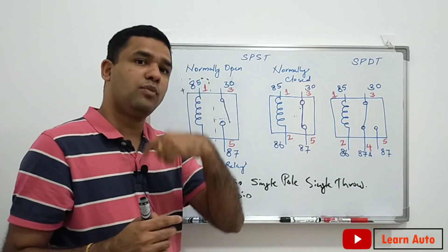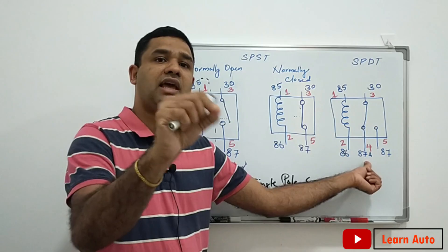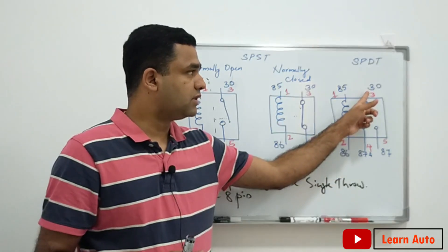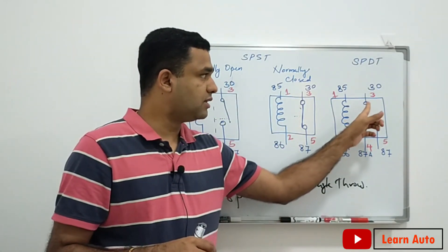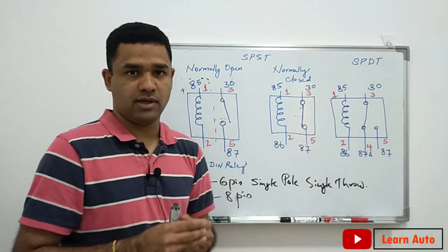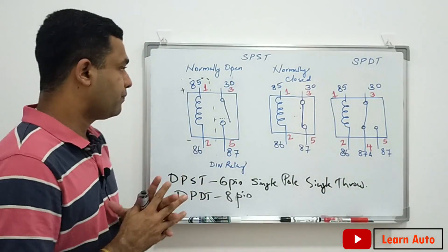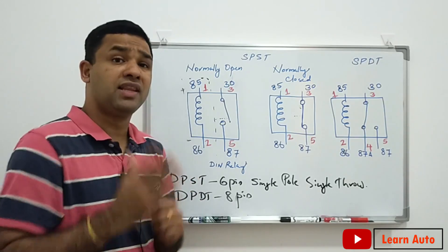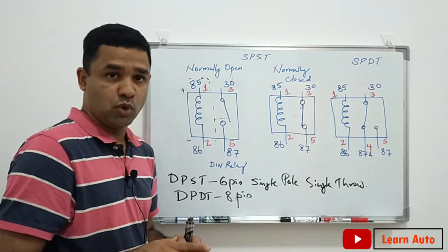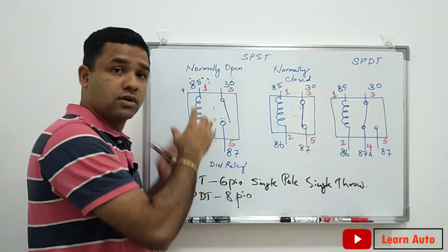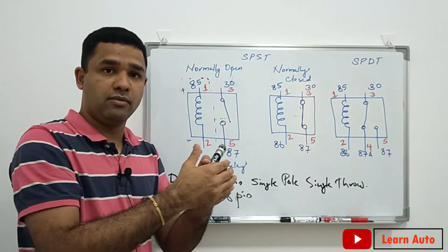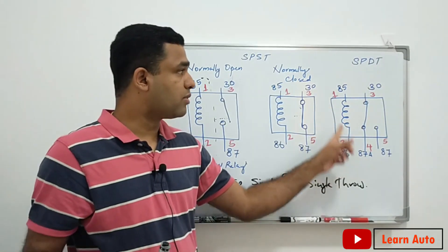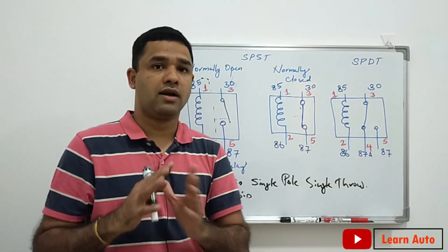For a 5-pin relay, pin number 30 is the power supply input and pin 87 is the power supply output. Pin 87A is the normally closed contact in normal condition.